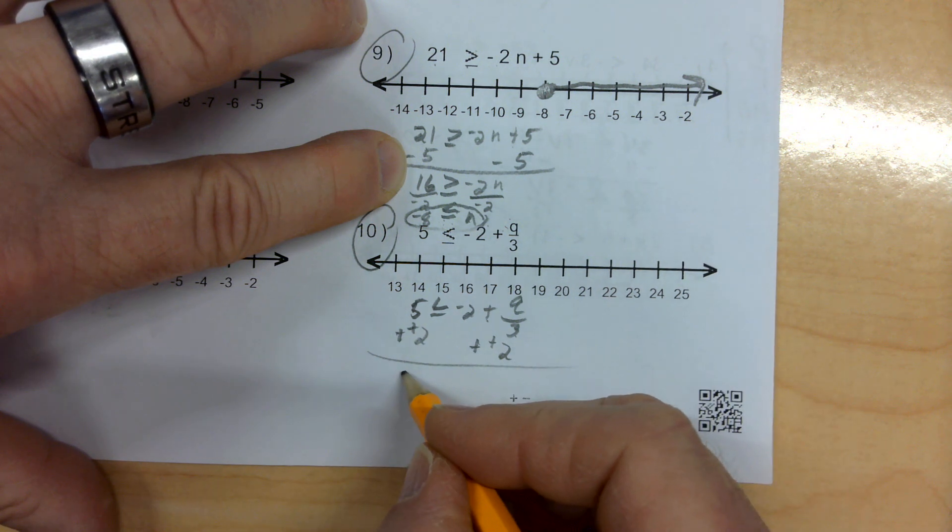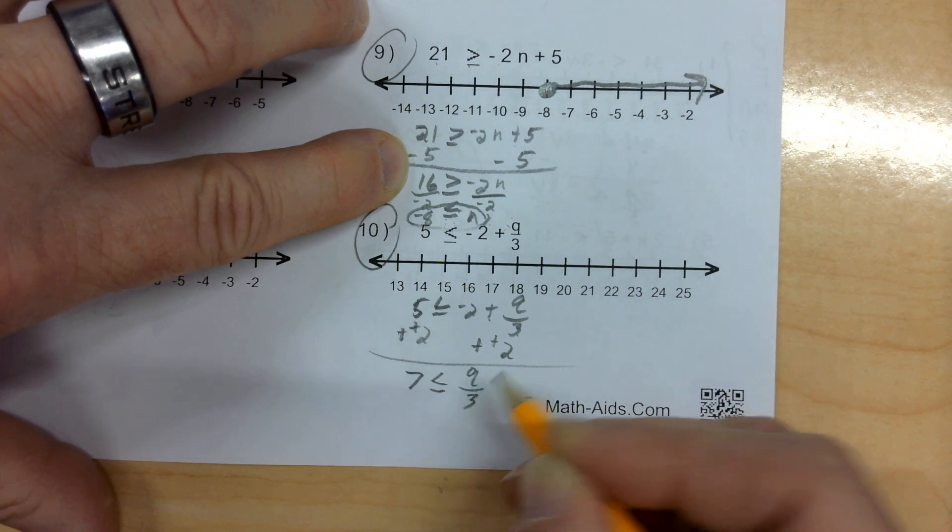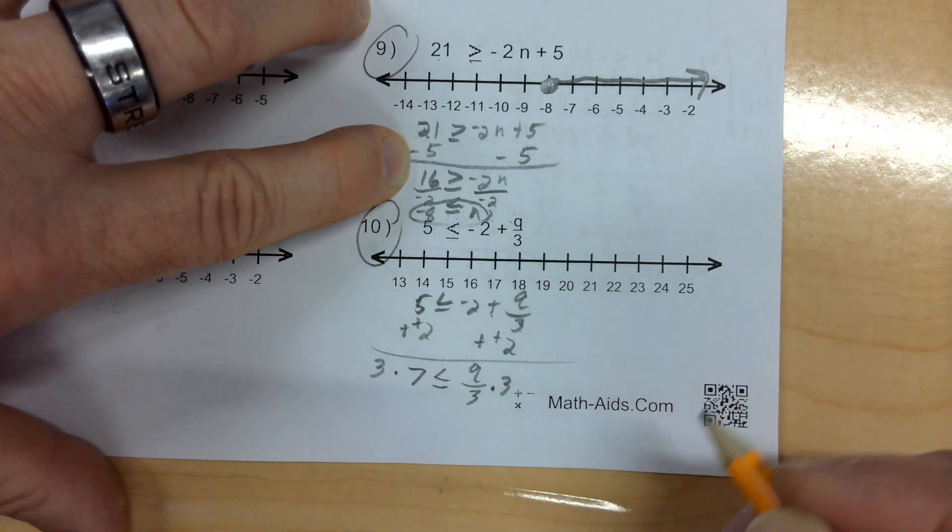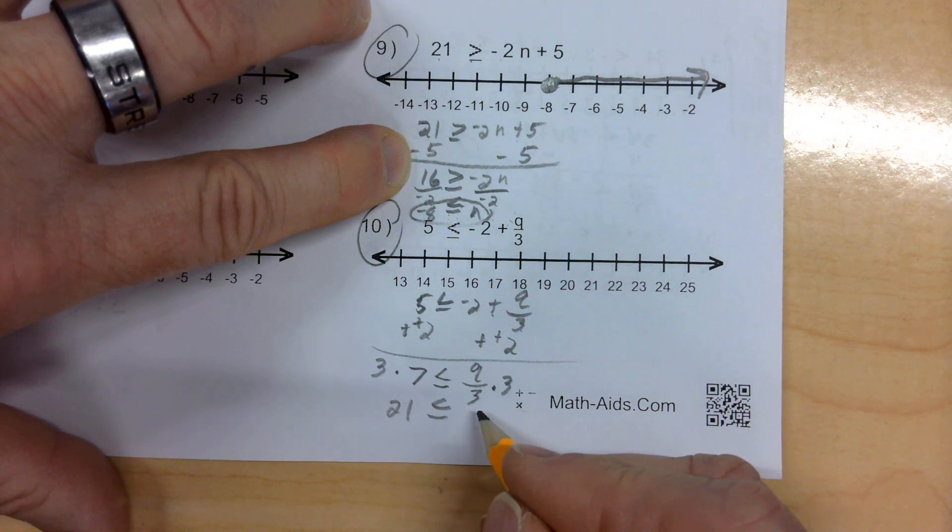Subtracting a negative is the same thing as adding a positive. When I do that, I get 7 is less than or equal to Q divided by 3. Now, I'm currently dividing by 3, so I multiply both sides by 3. It's a positive 3 I multiply by. Therefore, 3 times 7 is 21. And I do not flip my sign because I'm multiplying by a positive.